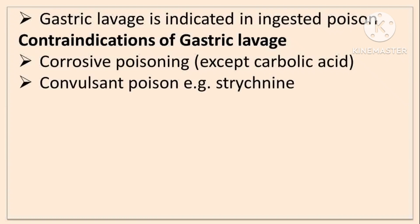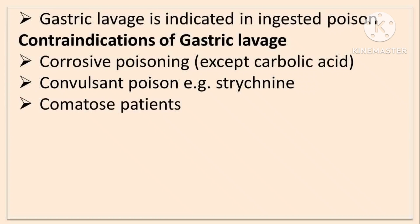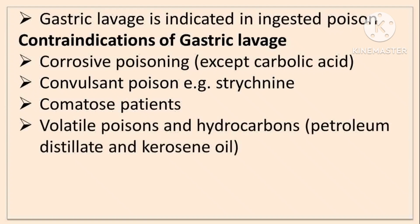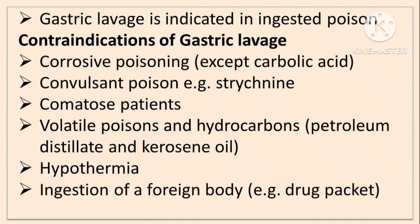In other poisonings, some precautions should be taken before conducting — like convulsant poisons such as strychnine, convulsions should be controlled first and then we can do gastric lavage. In comatose patients it should be avoided — there is a risk of aspiration. Volatile poisons and hydrocarbons like petroleum distillates and kerosene oil also carry risk of aspiration and may cause pneumonitis. In hypothermia it is contraindicated, and also if a foreign body like a drug packet is ingested it is contraindicated.